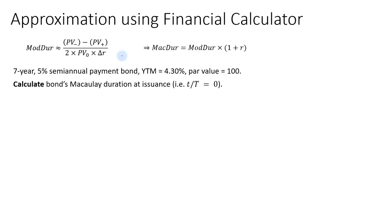The third method is to approximate using the formula that takes the difference between the bond's value when yield declines and when yield increases. We can easily do this using the financial calculator, and this is the method I recommend. Once we calculate the modified duration using this approximation, we multiply it by (1 plus the market discount rate per period) to get the Macaulay duration.